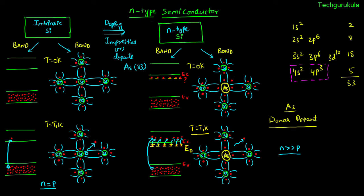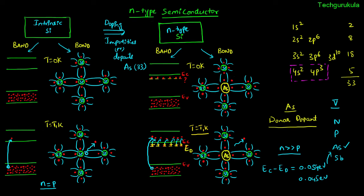Along with arsenic, there are other elements in the pentavalent group: nitrogen, phosphorus, arsenic, and antimony. The difference when doping with other pentavalent elements is where the donor energy level falls within the energy band gap — represented as EC minus ED. This value is 0.054 eV for arsenic and 0.045 eV for phosphorus.